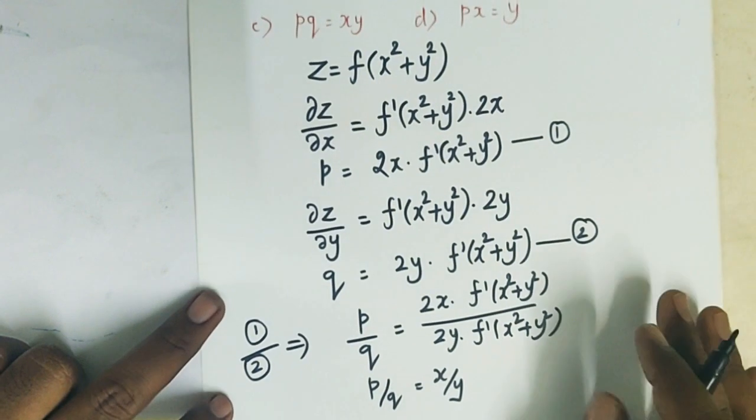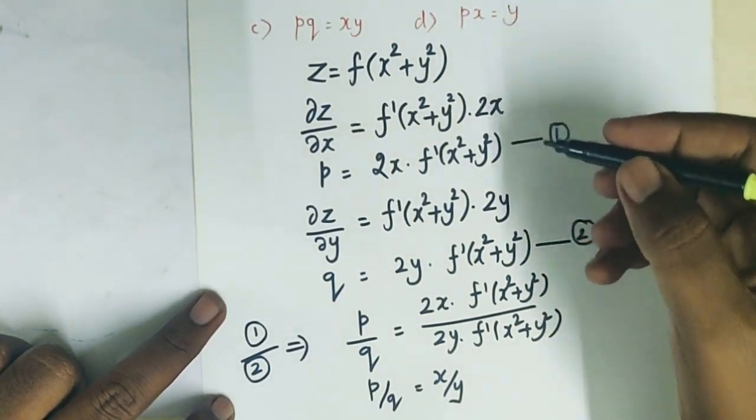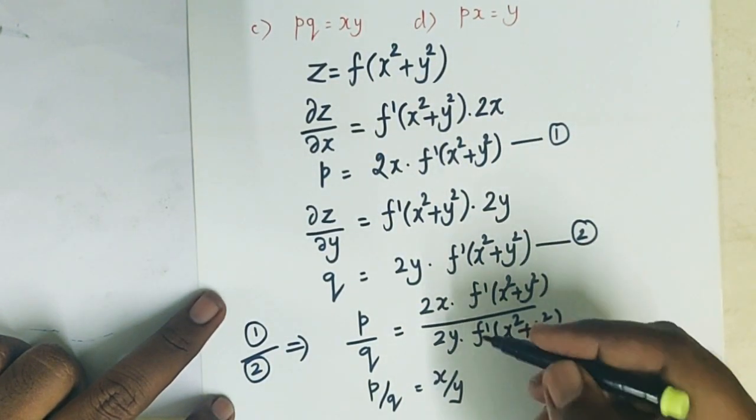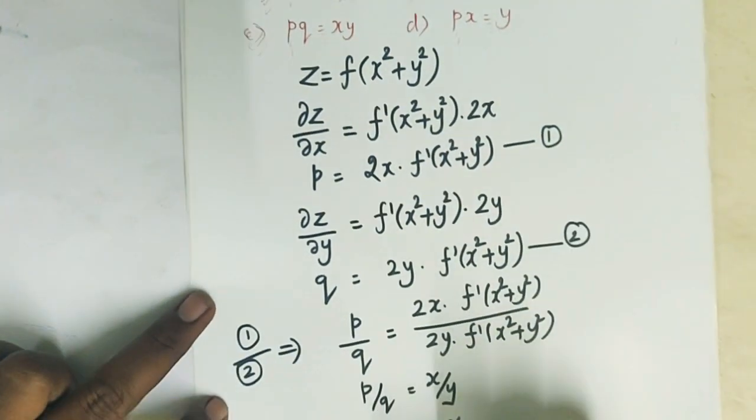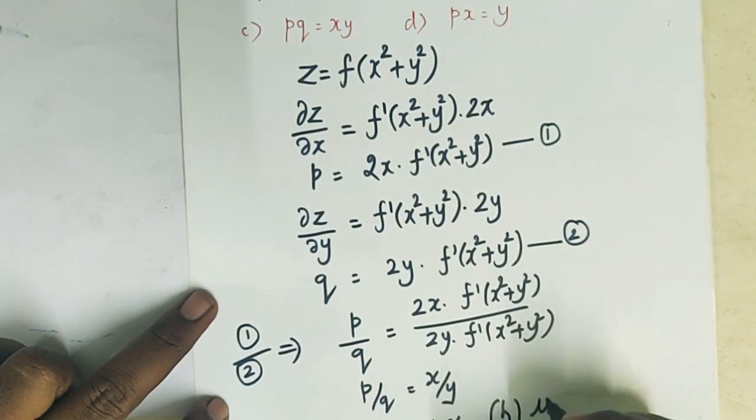Now you can check the options. py equal to qx. Cross multiplying gives py equal to qx. Option b is correct, so b is correct.